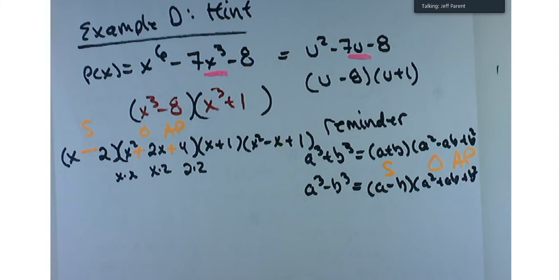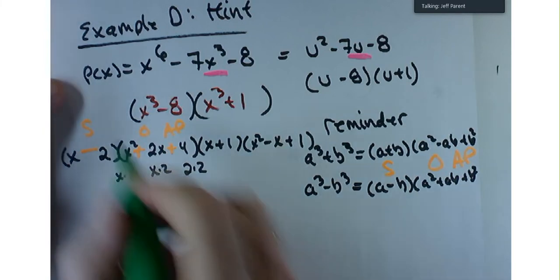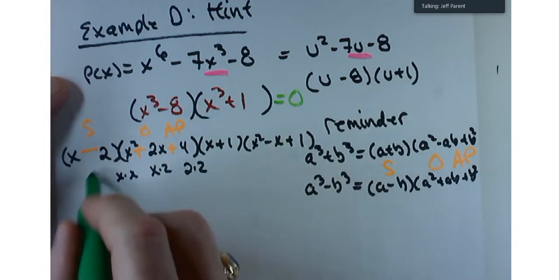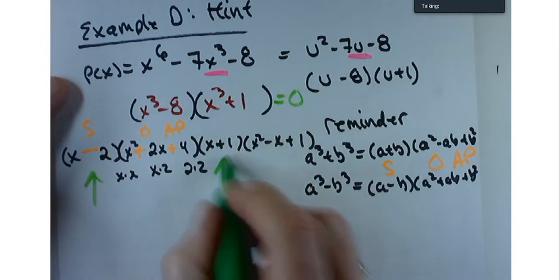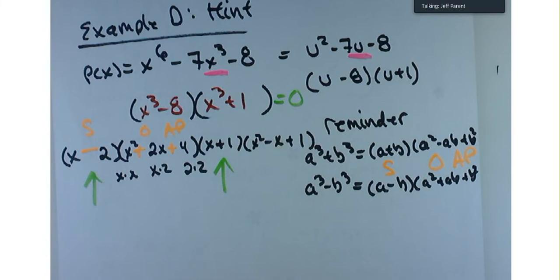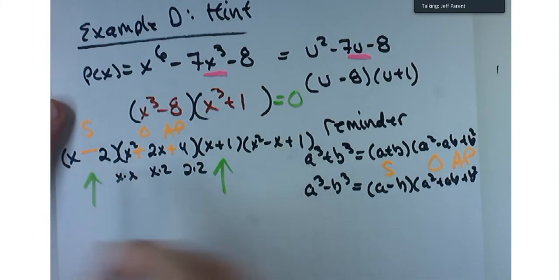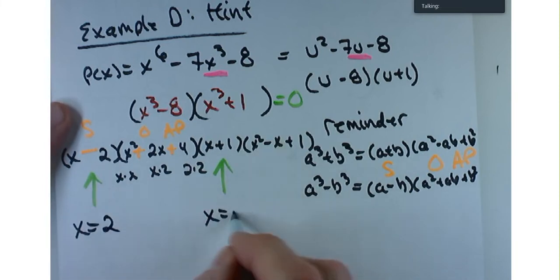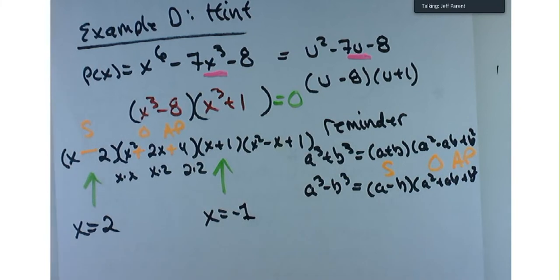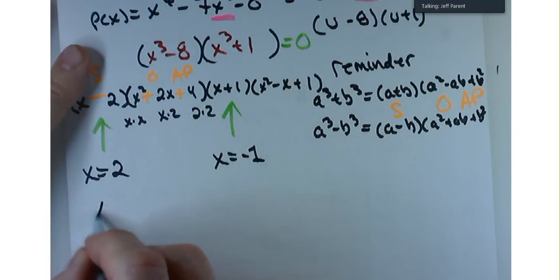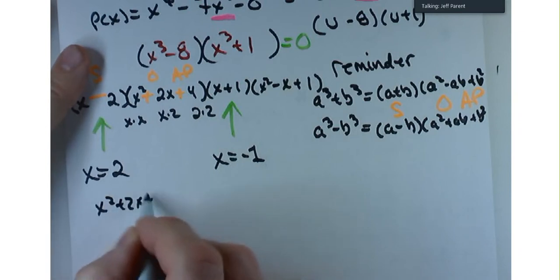You have a lot of work ahead of you. You should be able to tell me two of the solutions right away: from x minus 2 and x plus 1, x equals 2 and x equals negative 1. That's two of your solutions. You're going to get two more from x squared plus 2x plus 4 equals 0 and two more from the other trinomial.